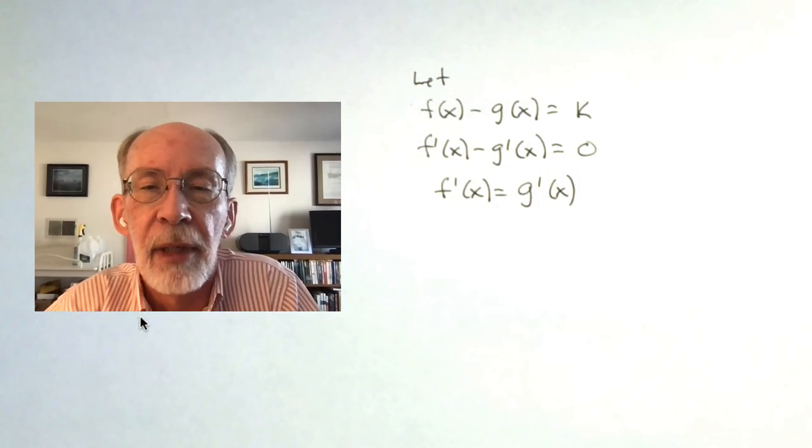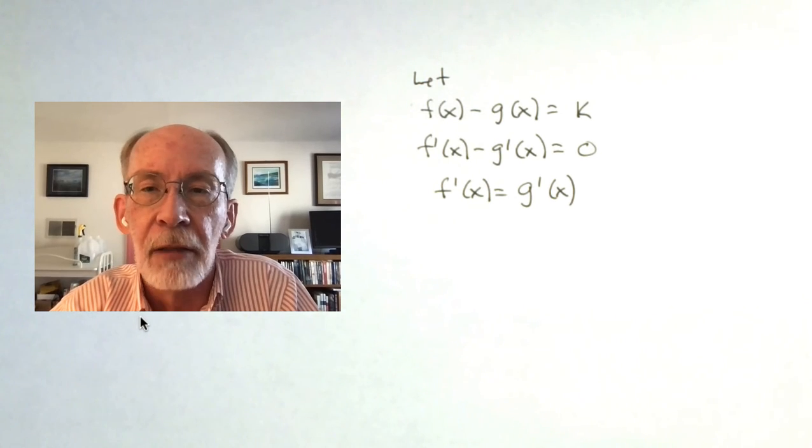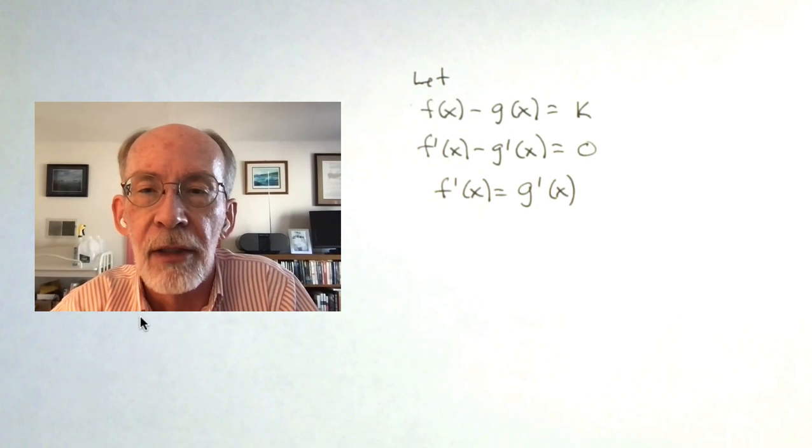So the first result, the result that was demonstrated by the Desmos file, flops right out. Two functions differ by a constant, their derivatives are equal.